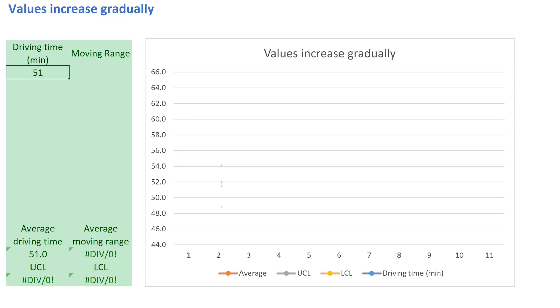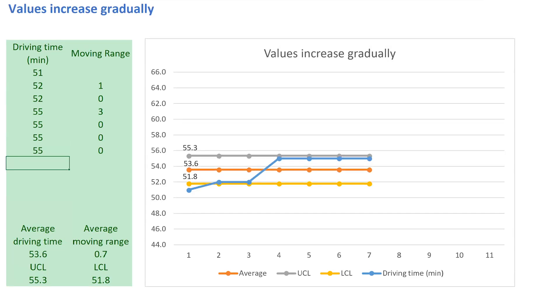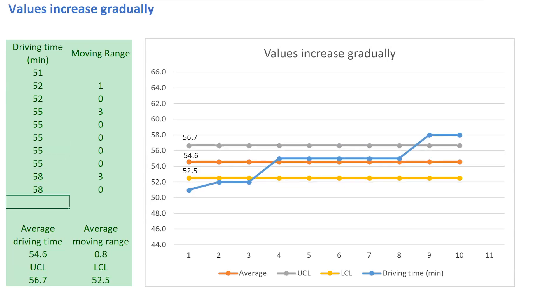In this first example, we plot values increasing gradually. As we enter the values, the moving range shows no jumps or very small changes from one value to the next. This results in narrow control limits.